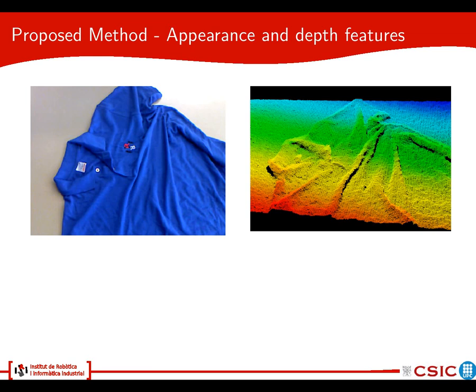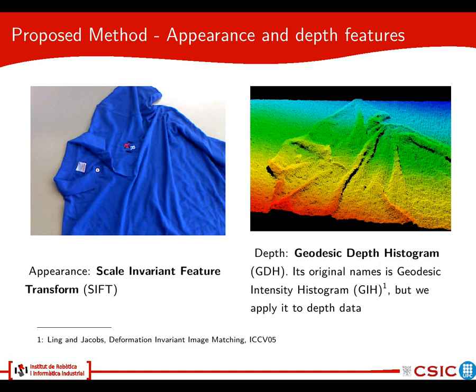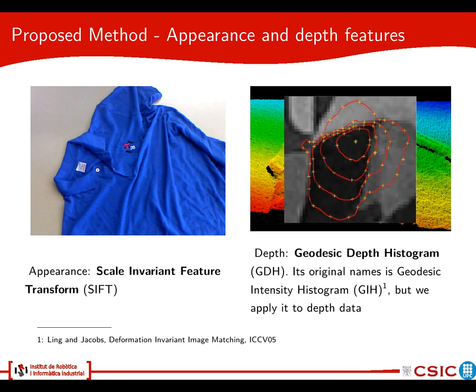To do so we are using two sources of information: the color image of the object perceived by the camera and the depth information acquired with the Kinect camera. For the color image we will use a Scale Invariant Feature Transform or SIFT to extract information from the image. For the depth part we will use the Geodesic Depth Histogram or GDH, which is an adaptation of the Geodesic Intensity Histogram or GIH but applied to depth data instead of intensity data. This geodesic depth histogram amounts to sampling points in equal geodesic distance curves around the point of interest, and it is deformation invariant, so it is very convenient given our purposes.